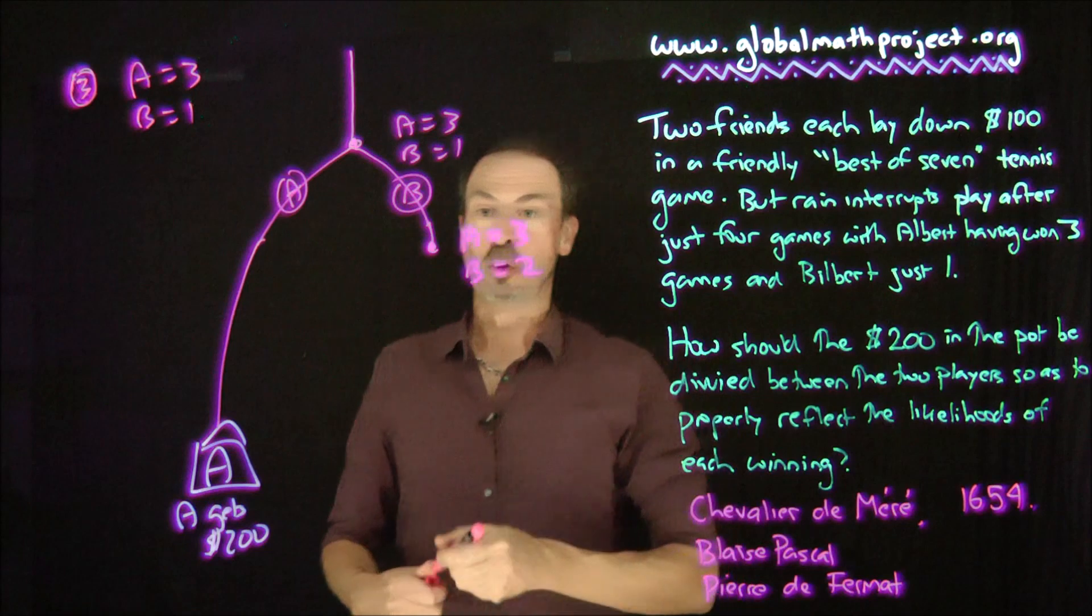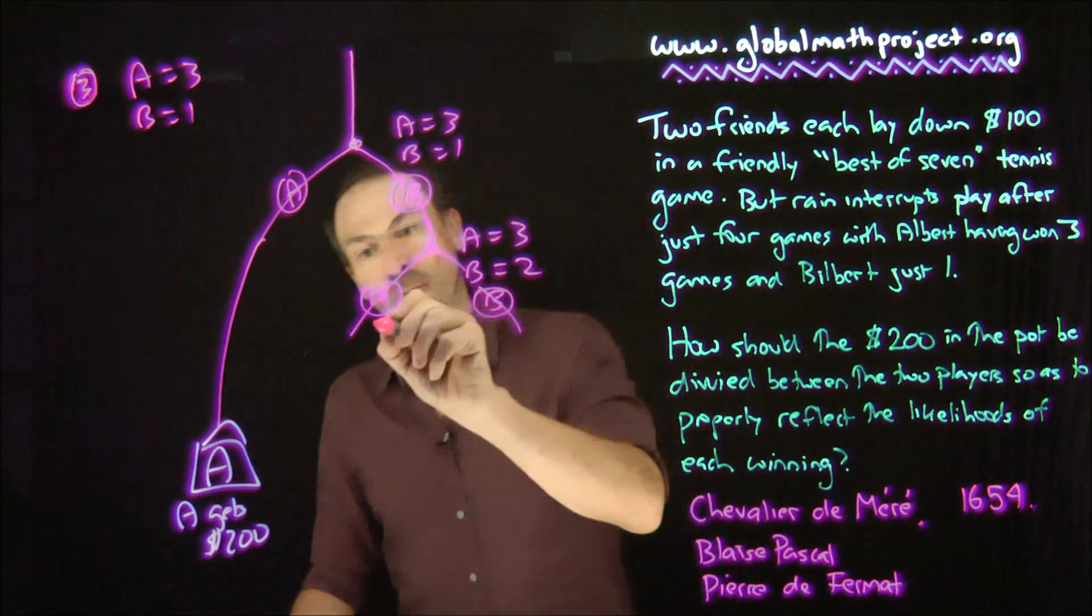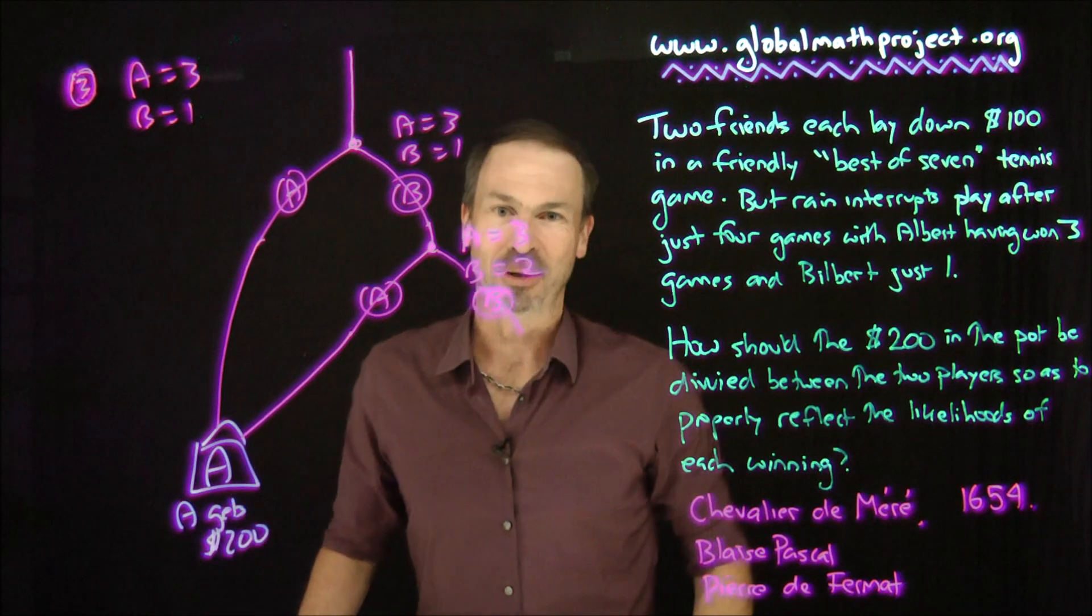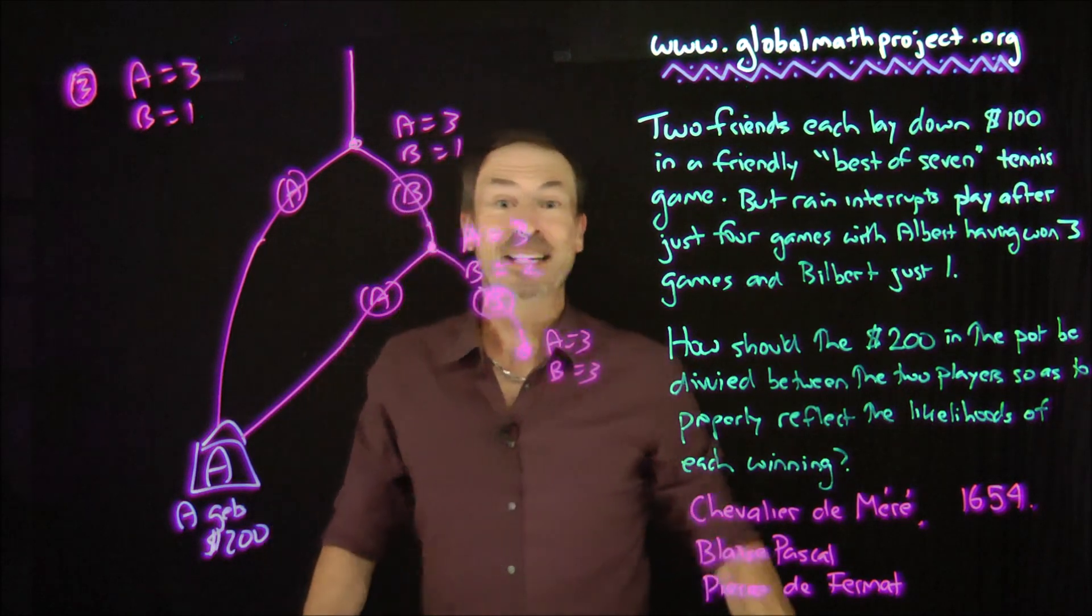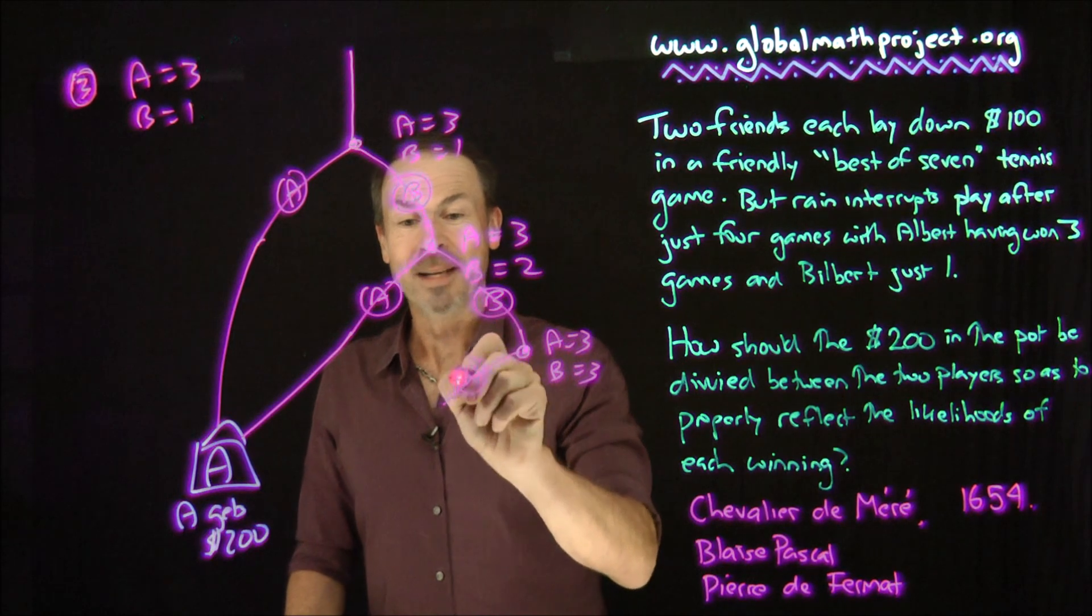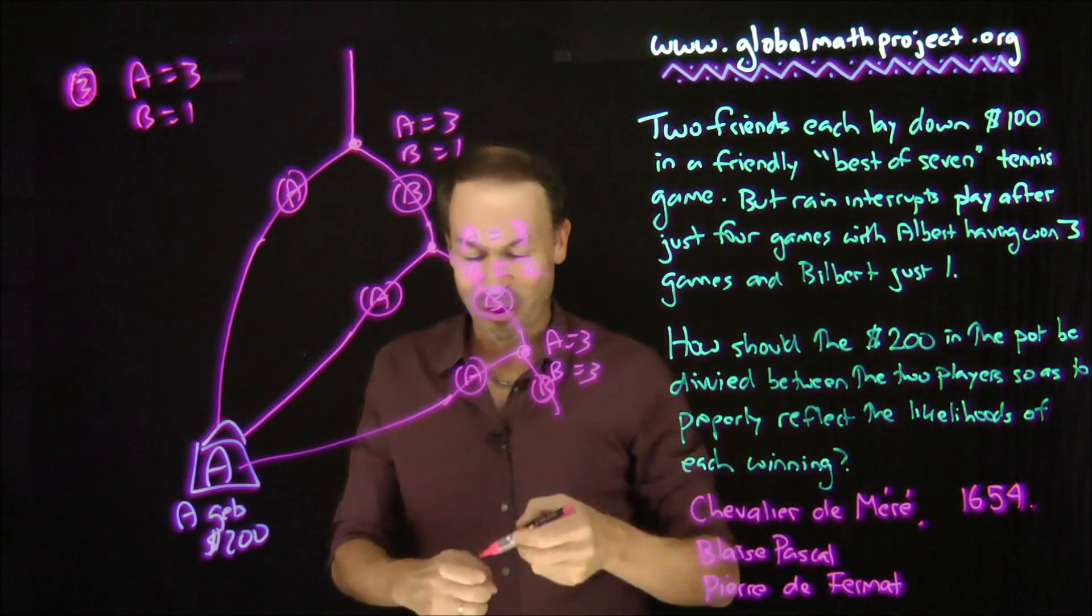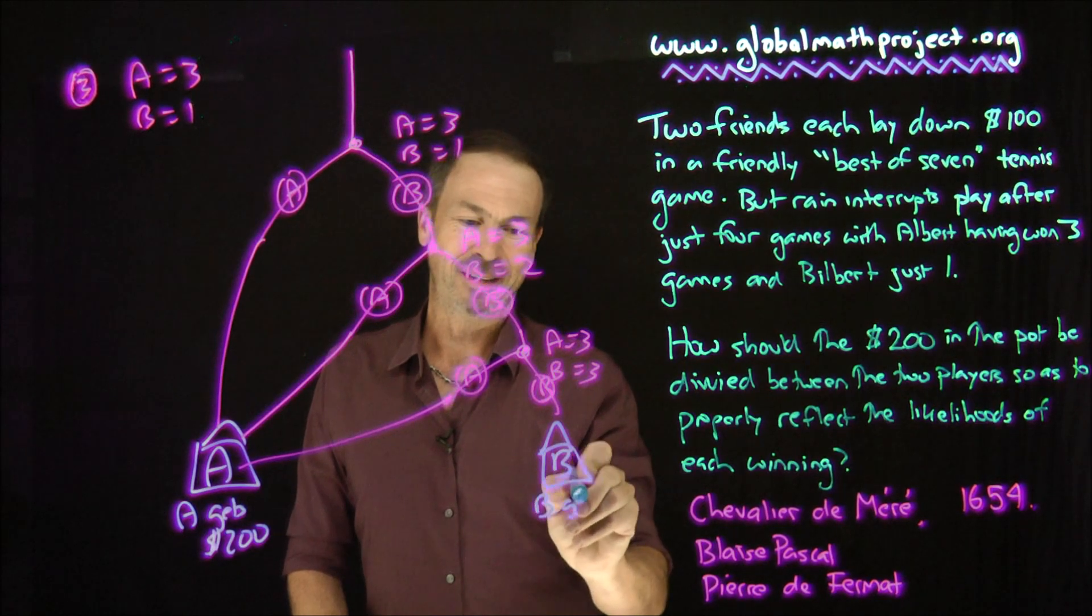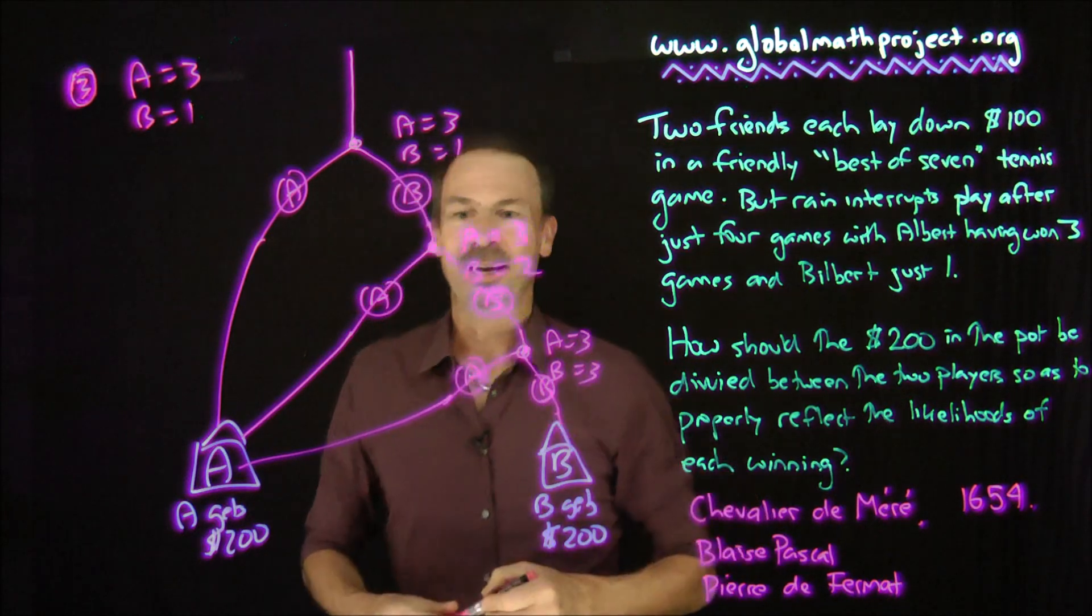So they play a sixth game, which gives two options. Either Albert wins or Bilbert wins. If Albert wins, he's won four games to two. Four out of seven is a win. Give him the $200. But if Bilbert wins, we're now in the situation of Albert's won three games, Bilbert's won three games and they need to play a seventh game. Two options. Either Albert wins and he gets the $200, four games to three. Or finally, Bilbert wins, three games to four. So he goes to the Bilbert house where Bilbert gets $200. There's the scenario.